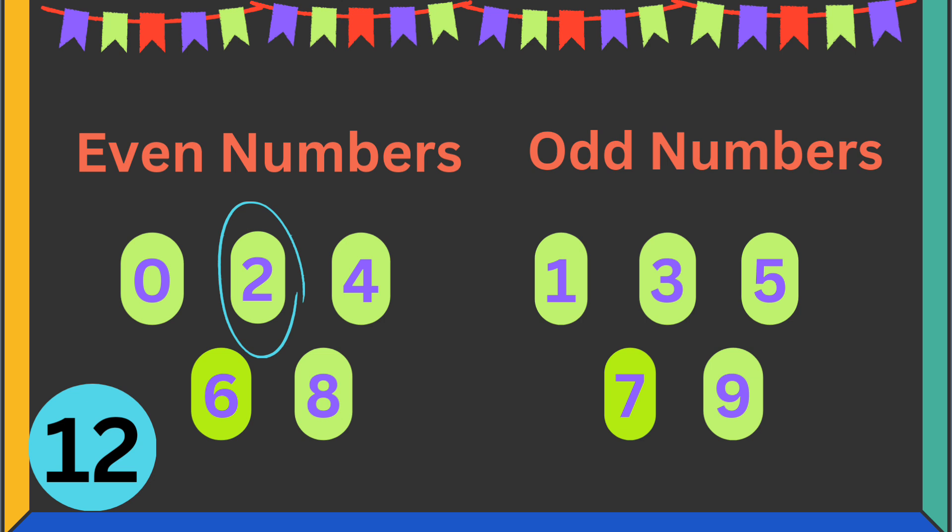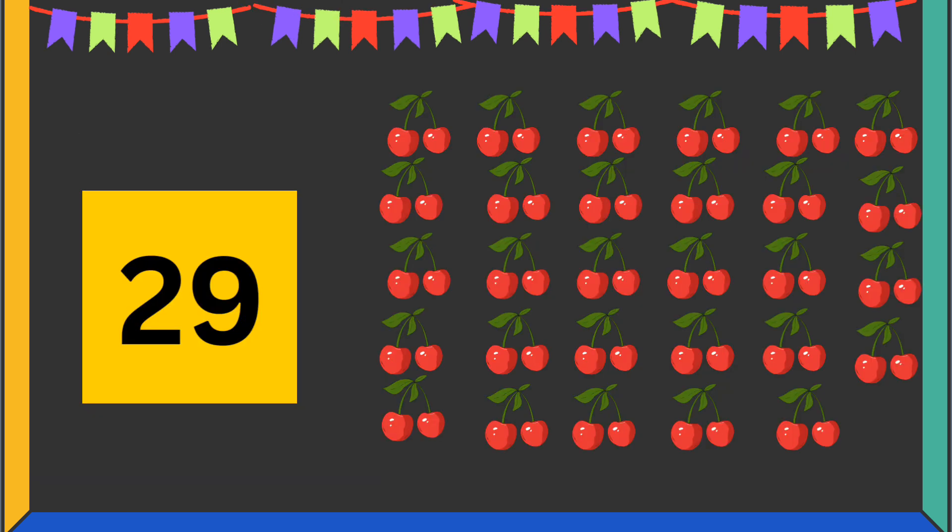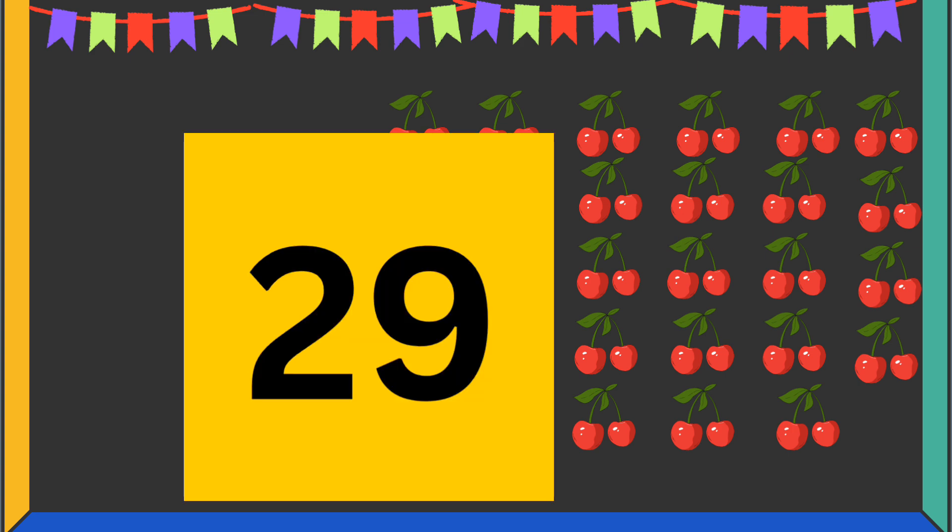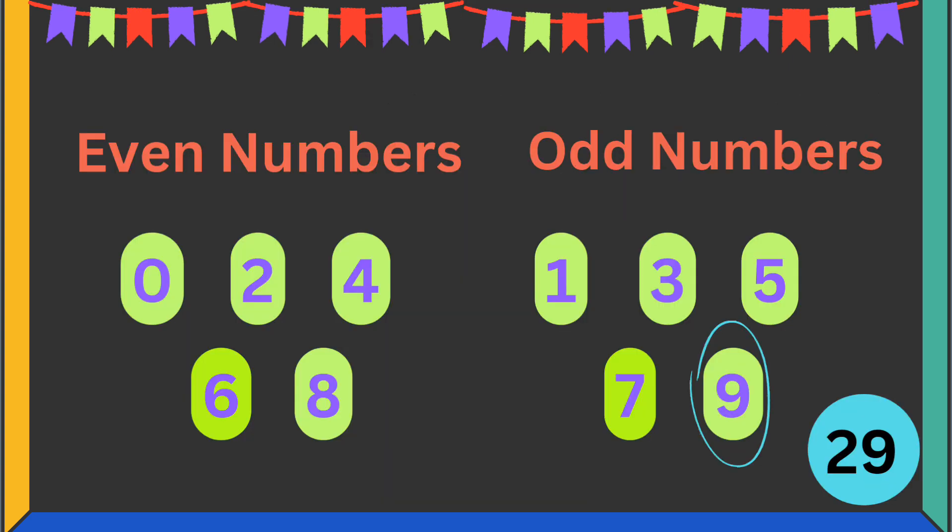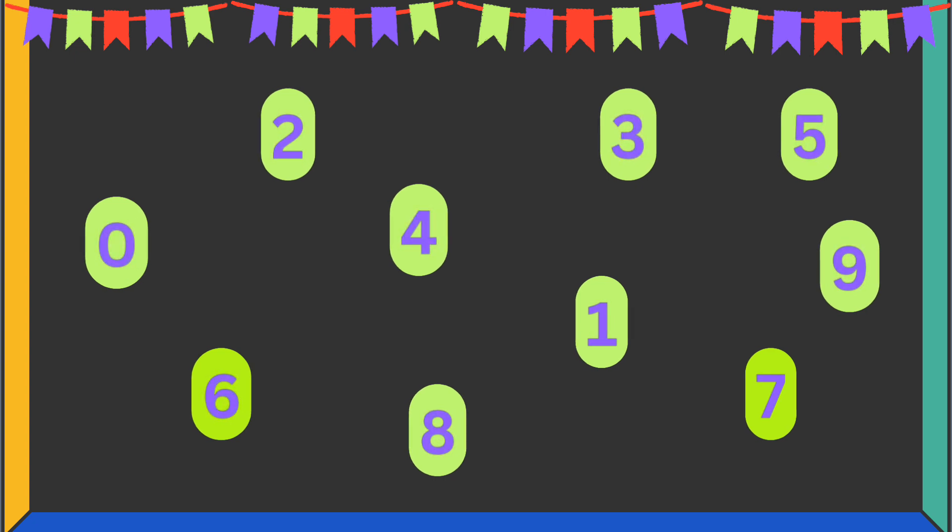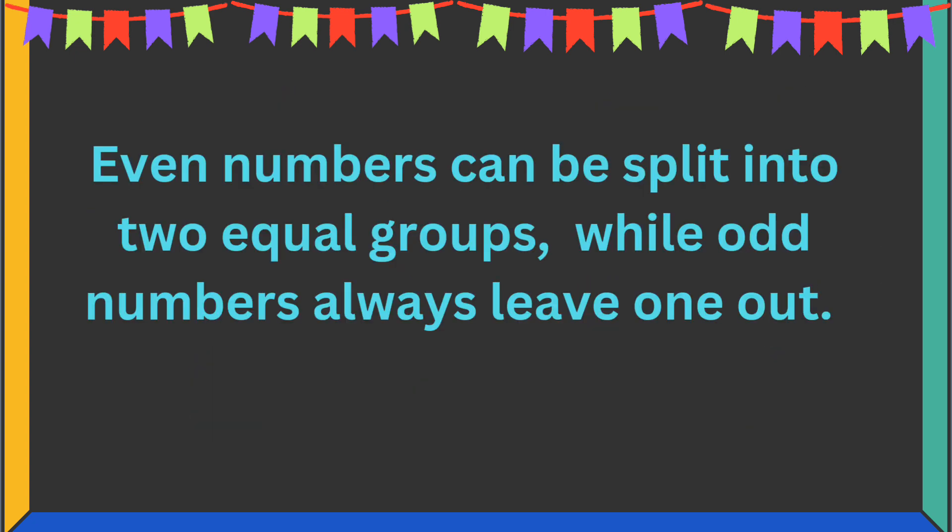Great! Let's see what we have next: 29 cherries. We can find out if 29 is an even or odd number. Right, absolutely! The last digit in 29 is 9. Based on our trick, 9 is an odd number, which means that 29 is an odd number as well.